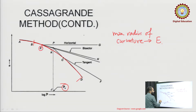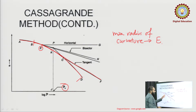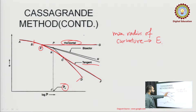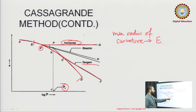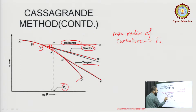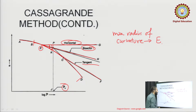At point E, we will draw a tangent Ef to the curve. At the same point E, we also draw a horizontal line Eg. Once these two lines are drawn, we find the bisector of the angle between them. The bisector of this angle will be Eh. So all three lines — the tangent Ef, horizontal Eg, and bisector Eh — pass through point E.